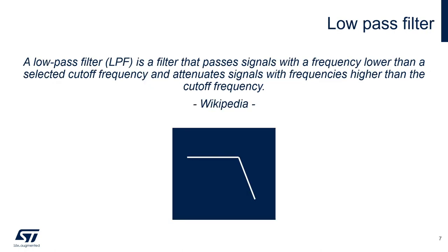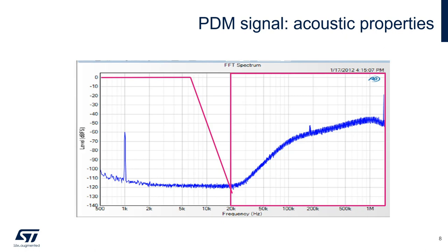A low-pass filter is a filter that passes signals with a frequency lower than a selected cutoff frequency and attenuates signals with frequencies higher than the cutoff frequency. The low-pass filter is required in PDM to PCM conversion to remove the high-frequency noise which characterizes the PDM output, and it's also used to avoid aliasing and noise in the resulting PCM. Since we are dealing with digital signals, we are going to use a digital filter — specifically, a finite impulse response filter, or FIR.